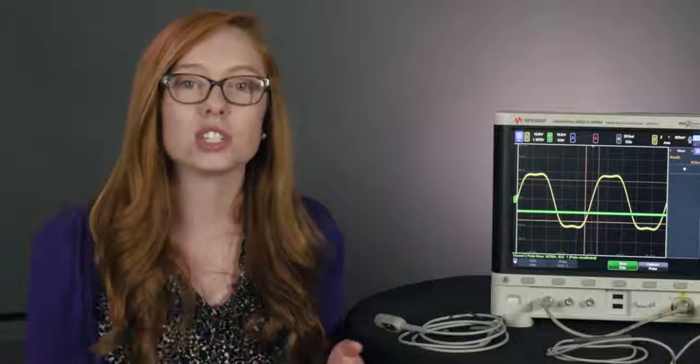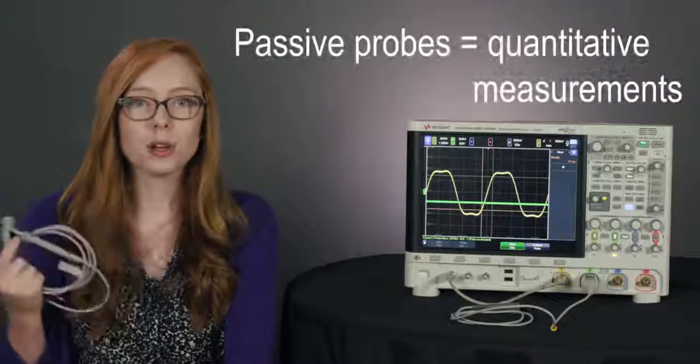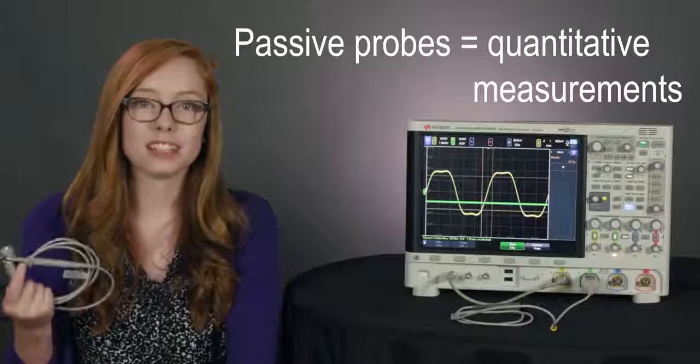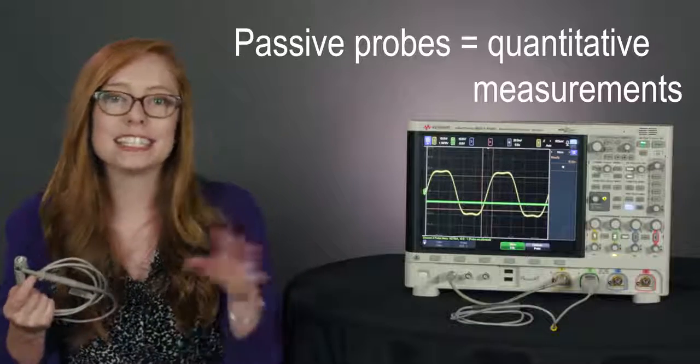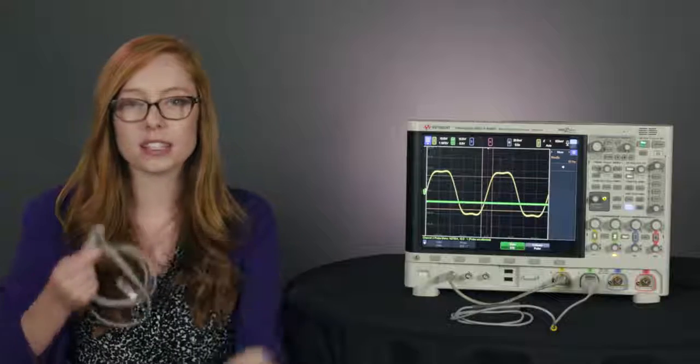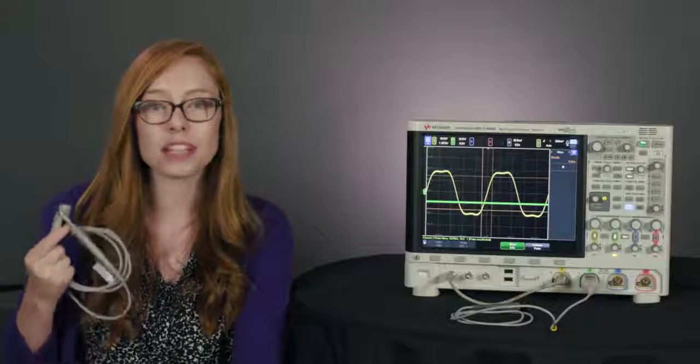And this difference in the design of these two types of probes leads to a difference in performance. Passive probes are great for general purpose measurements. If you need to take a quick quantitative measurement or if you're working in DC up to low frequency ranges a passive probe is probably the right choice for you. This is because of the wide dynamic range of passive probes and that they go up in bandwidth to around 500 megahertz.